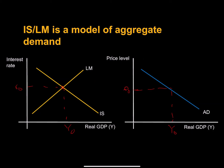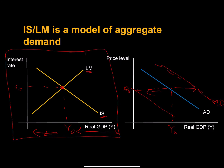Any change in any of the determinants of IS or LM that leads to a higher level of real GDP is going to lead to a rightward shift in our aggregate demand curve. Any change in the determinants of the LM curve or the IS curve that leads to a lower equilibrium real GDP is going to cause a leftward shift in our aggregate demand curve. I hope this video helps you understand the relationship between our IS-LM framework and aggregate demand. IS-LM is a model of aggregate demand.